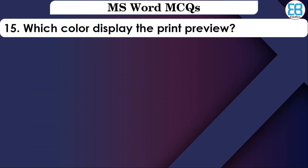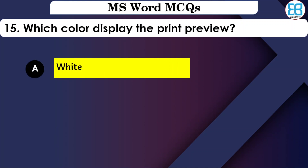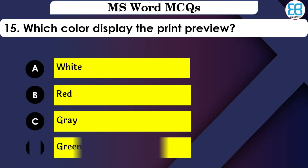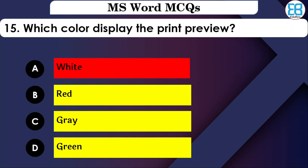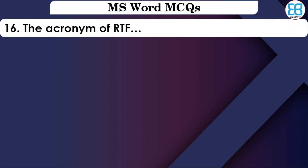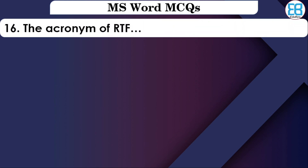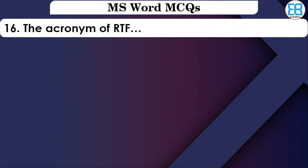Which color displays the Print Preview icon? The options are: White, Red, Gray, or Green. The correct option is White — the Print Preview icon displays in white color.